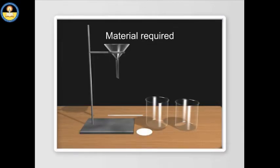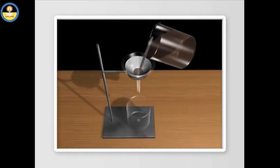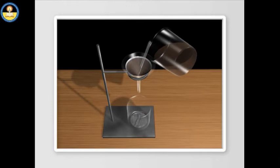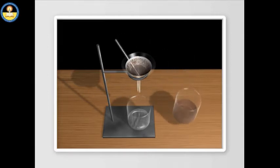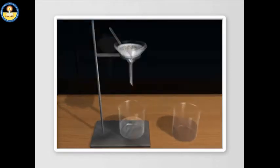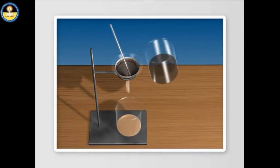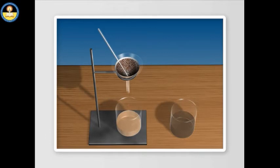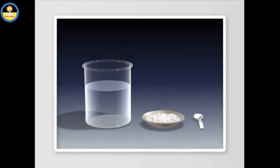The suspension of sand can be easily separated from water by filtration. When we pour the sand and water mixture through a filter paper placed in a funnel, the sand collects on the paper while water flows through, because sand particles are larger than the pores of filter paper. Colloidal particles cannot be separated by filtration as they are small enough to pass through filter paper pores. Similarly, particles of true solutions cannot be separated by filtration, indicating they are extremely small.